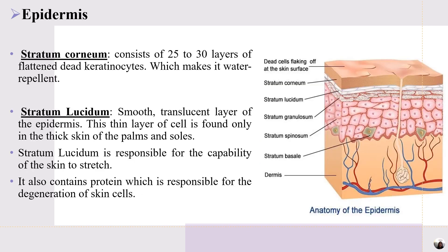The epidermis consists of five layers: stratum corneum, stratum lucidum, stratum granulosum, stratum spinosum, and stratum basale. Stratum corneum consists of 25 to 30 layers of flattened dead keratinized cells, which makes it water repellent.